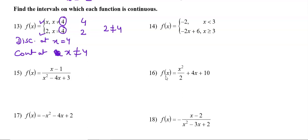So the function is continuous at x ≠ 4. Question number 14: f(x) = -2 for one part, also a linear function. Linear functions are continuous before and after x = 3. At x = 3 the first function is -2, and the second function: -2(3) + 6 = 0.